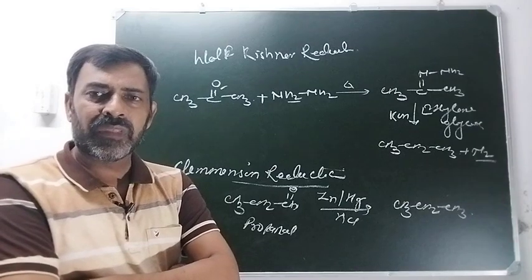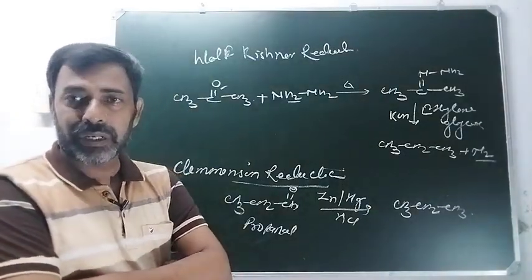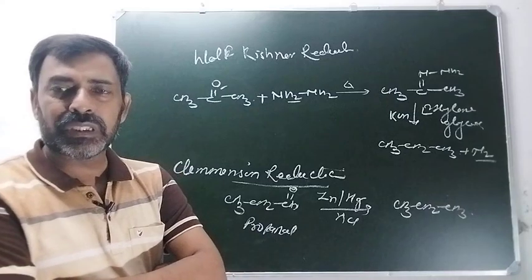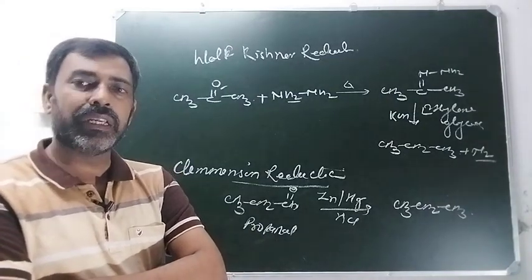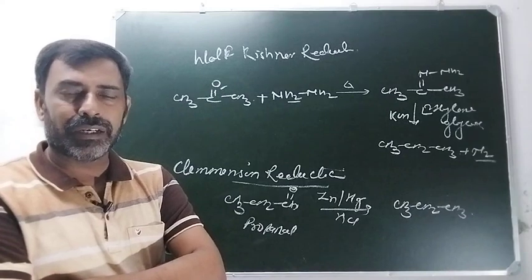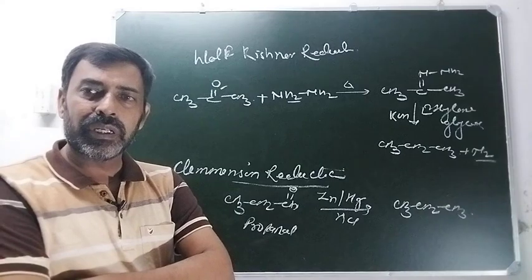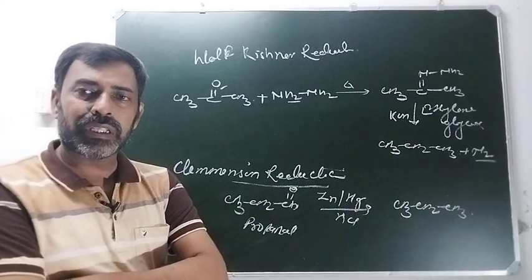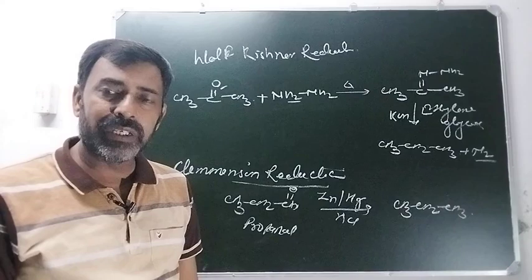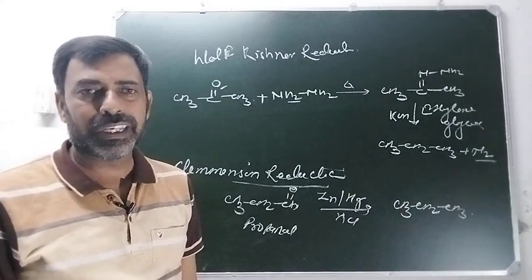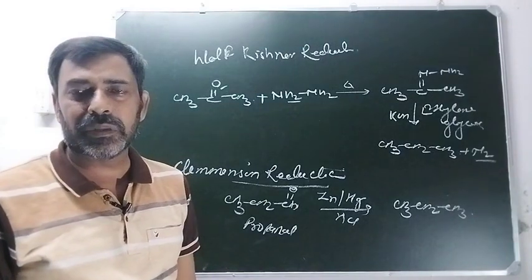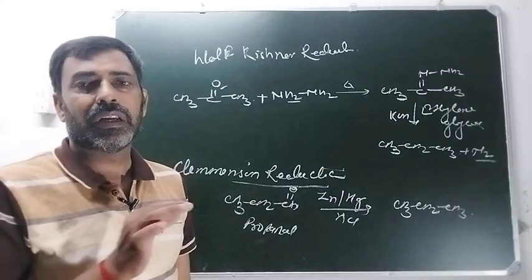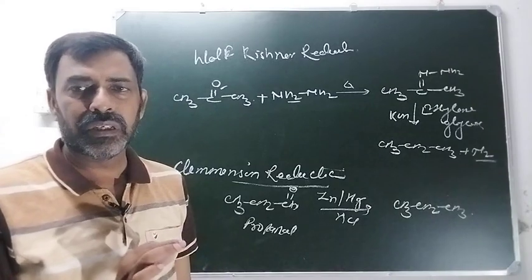Then which one is the better? Surely the Clemmensen reduction is the better reaction because of the lesser number of steps. Steps जितने कम होते जाएंगे, product का yield उतना ही ज्यादा बढ़ता जाएगा। So Clemmensen reduction has higher yield with respect to Wolf-Kishner reduction। दोनों same product देते हैं, लेकिन Clemmensen reduction में yield ज्यादा होता है क्योंकि number of steps कम होते हैं।